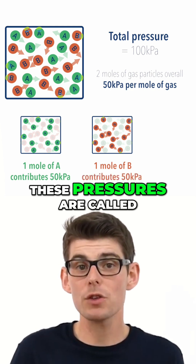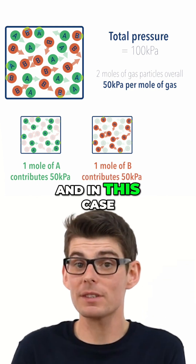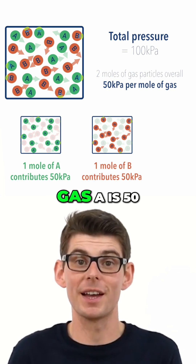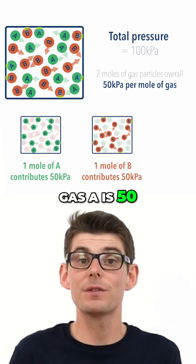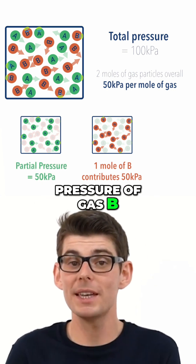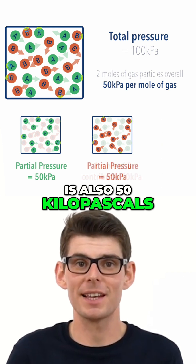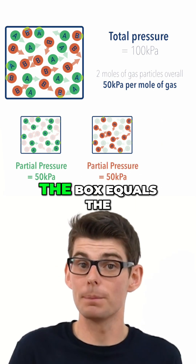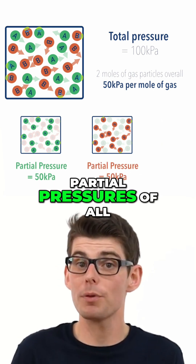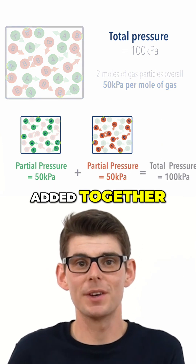These pressures are called partial pressures. In this case, the partial pressure of gas A is 50 kilopascals, and the partial pressure of gas B is also 50 kilopascals. The total pressure in the box equals the partial pressures of all gases in the box added together.